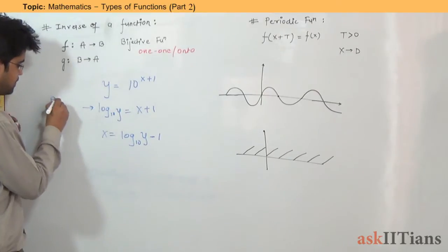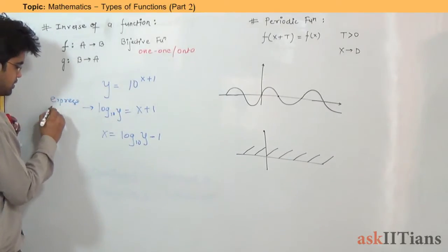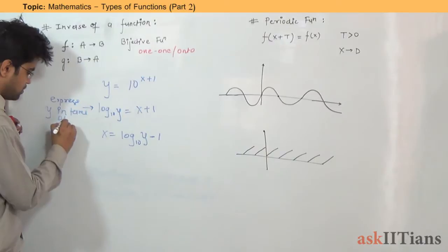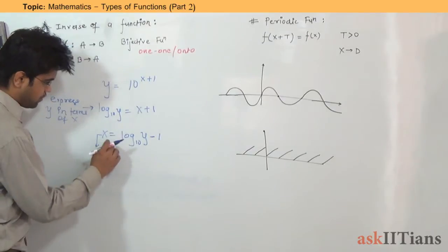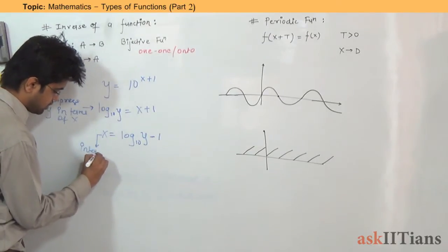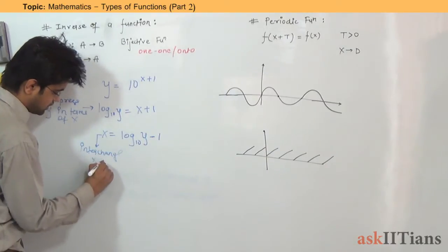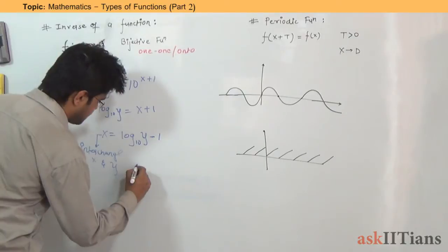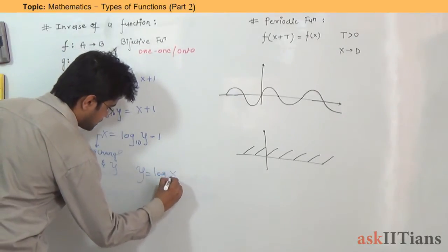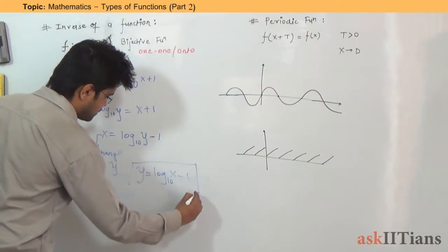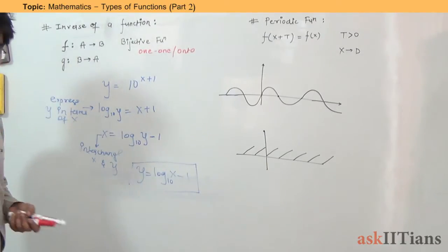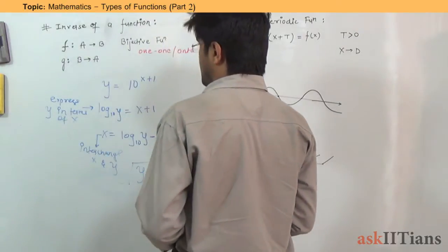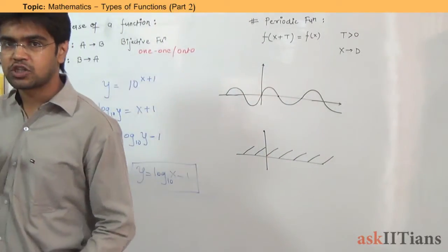What are the steps? First, express y in terms of x. Then find x in terms of y. Finally, interchange x and y. So the inverse of this function becomes y = log₁₀x − 1. This is the method to find the inverse of any function. Remember that the function must be one-one.